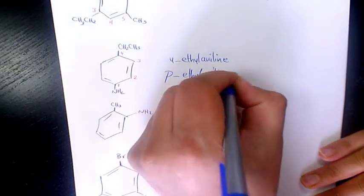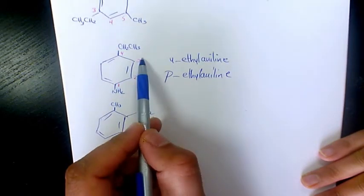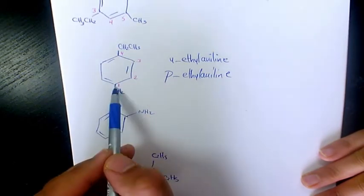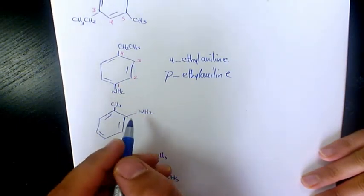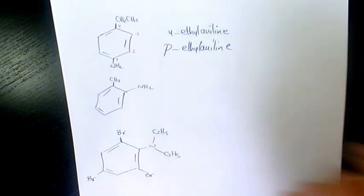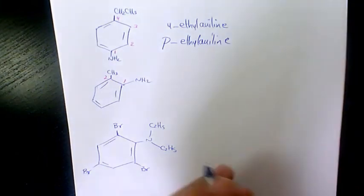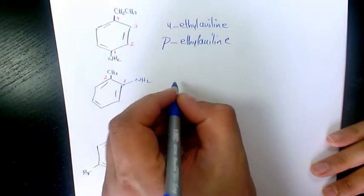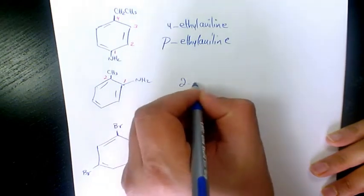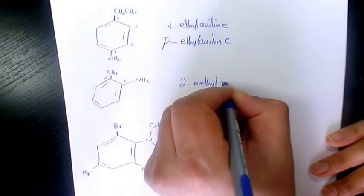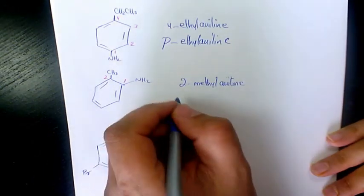So whenever we have positions one and four, we call it para or p. Whenever we have one and three, we call it meta or m. And whenever you have one and two, it's going to be ortho, or o. The next one has one and two, so we have 2-methylaniline — that's ortho-methylaniline.